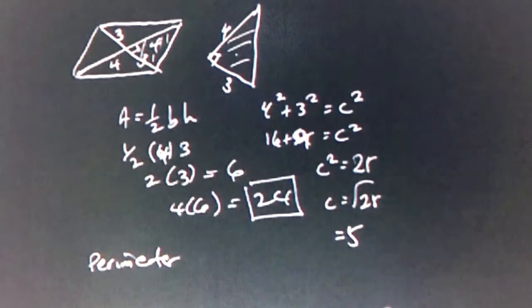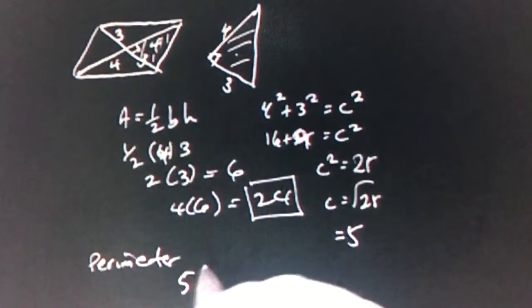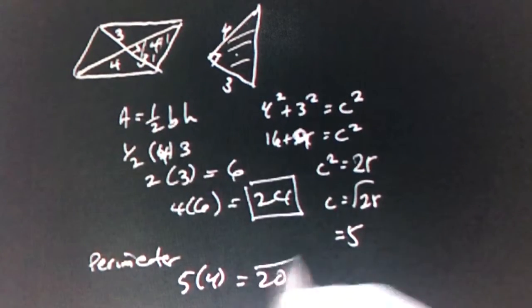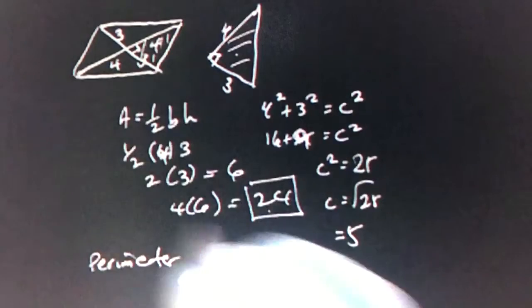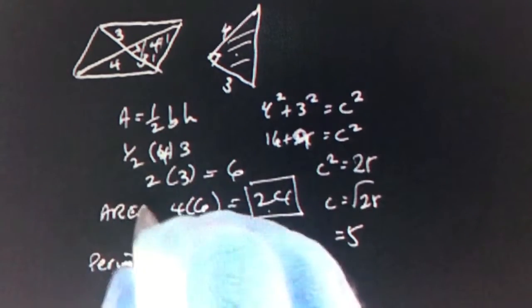And since we found that, then we can know that the perimeter is 5 times 4 equals 20. So that's the perimeter. That's the area. And that's the problem.